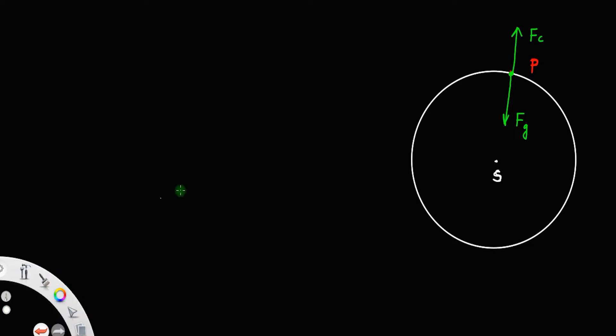For the equilibrium of the planet, or in order for the planet to maintain this circular path, these two forces must be equal. If they are not equal, the planet will not move in this circular path. So we have Fc, that is centrifugal force, equals the gravitational force Fg.